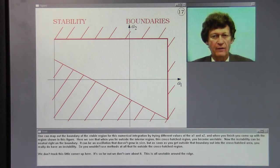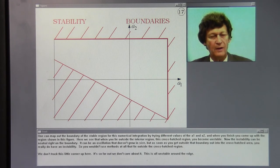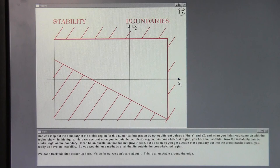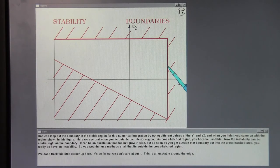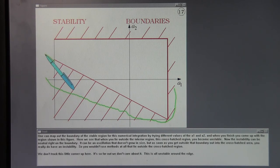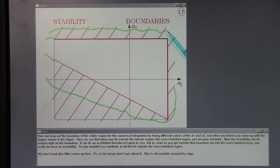One can map out the boundary of a stable region for this numerical integration by trying different values of the A1 and A2. And when you finish, you come up with a region shown in this figure. Here we see that when you lie outside the interior region, in this cross-hatched region, you become unstable. Now, the instability can be neutral right on the boundary. It can be an oscillation that doesn't grow in size. But as soon as you get outside that boundary, out into the cross-hatched area, you really do have an instability. And so you wouldn't use methods at all that lie outside in the cross-hatched region.